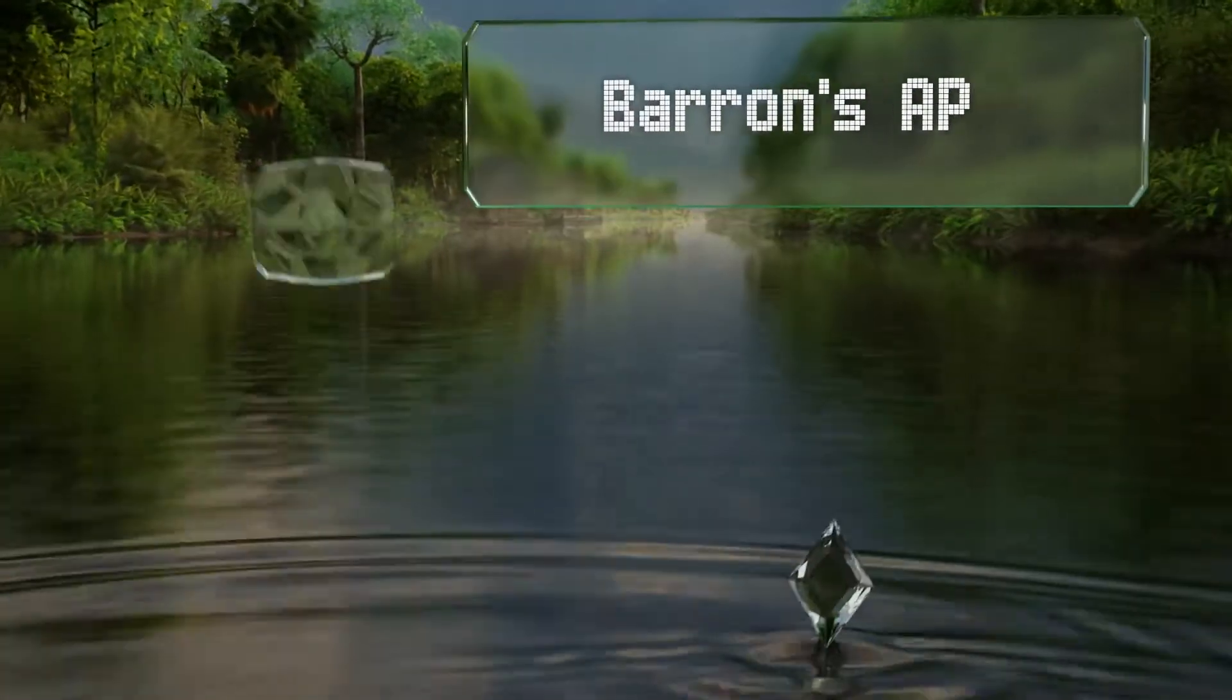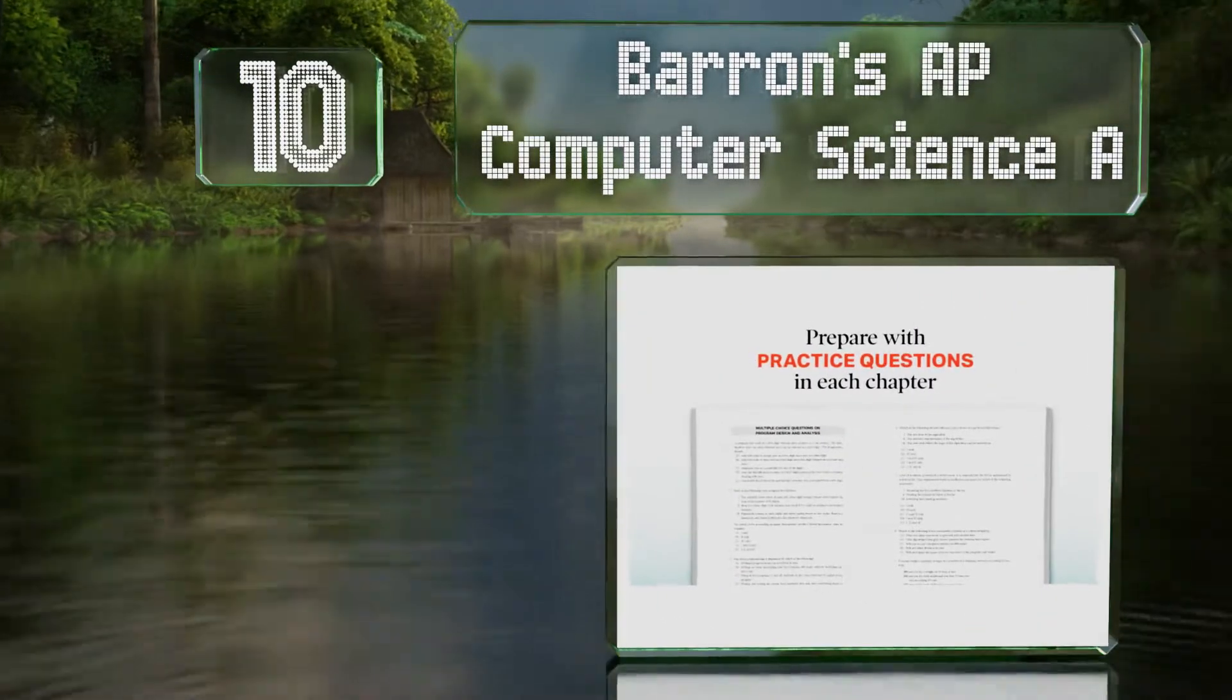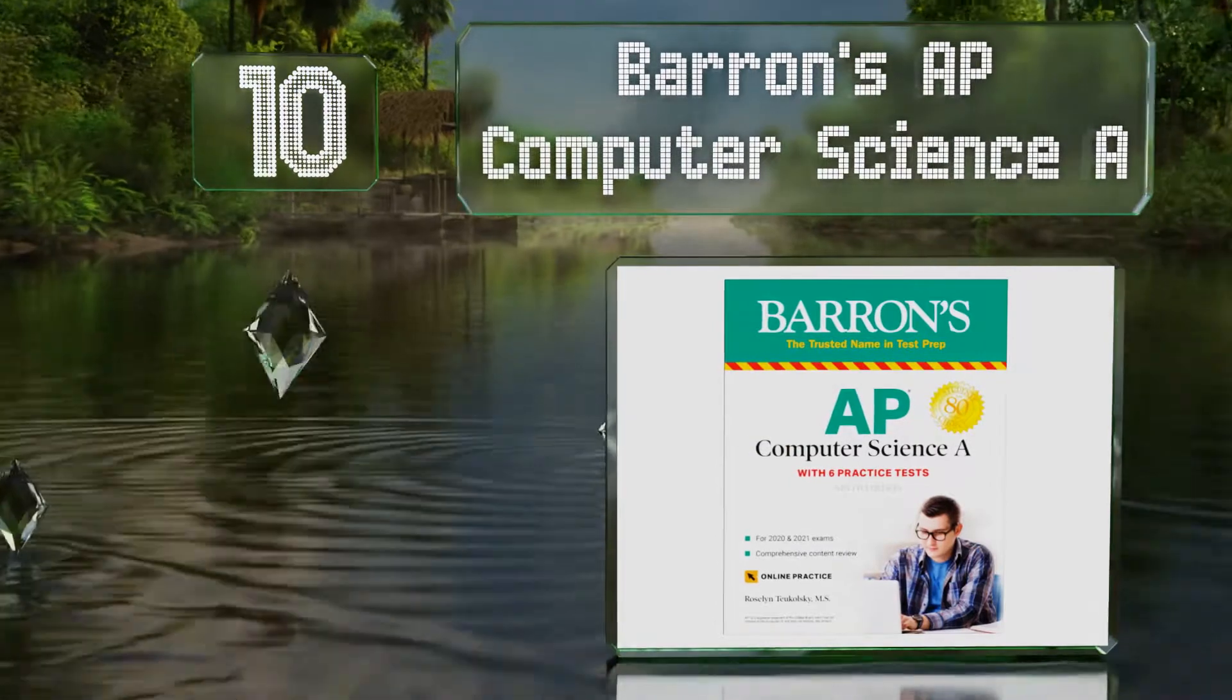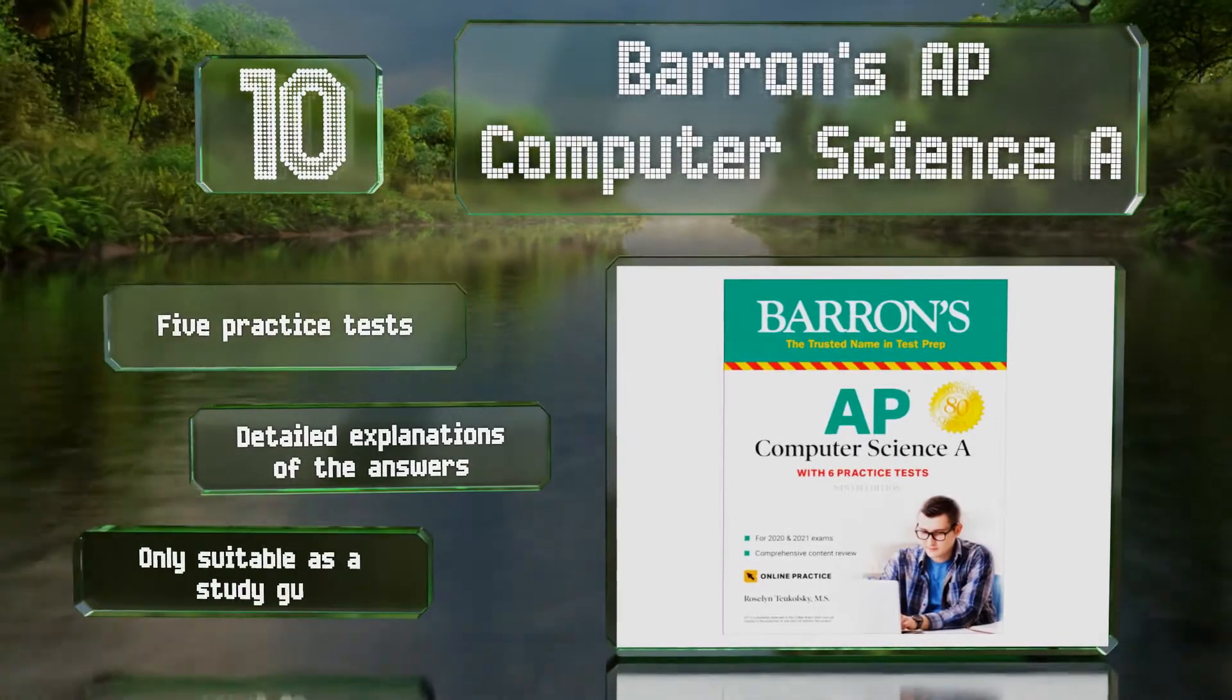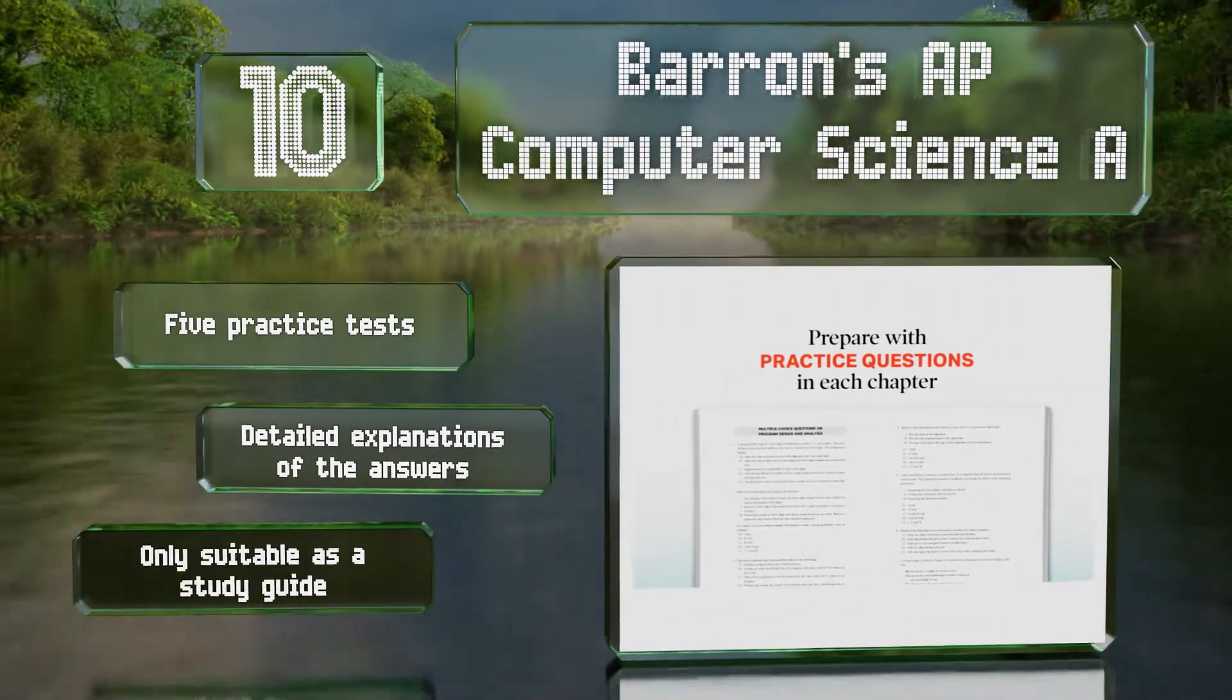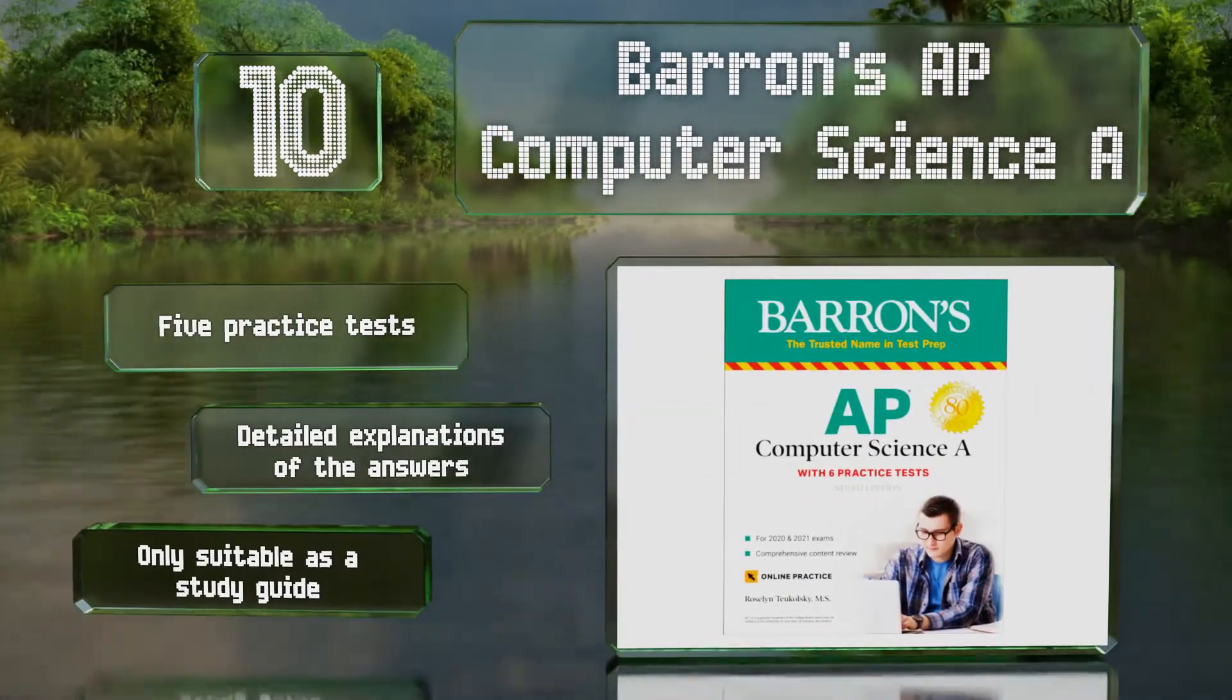10: High schoolers prepping for college-level coursework should appreciate Barron's AP Computer Science A, which features diagnostic quizzes and charts explaining the topics for each exam question. For anyone else though, the scope may not be broad enough. It includes five practice tests and detailed explanations of the answers, however it is only suitable as a study guide.